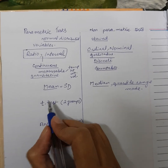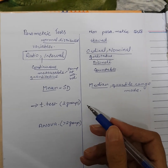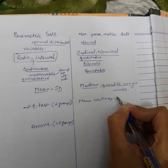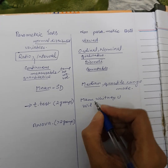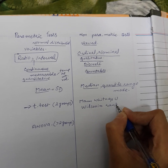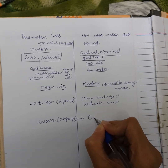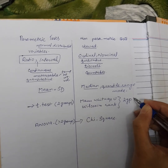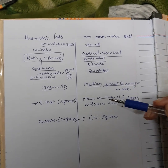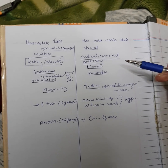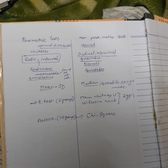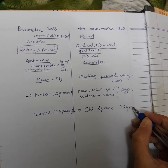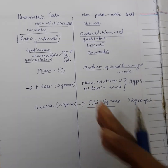In contrast, in non-parametric tests, the equivalent of the T-test is the Mann-Whitney U-test and the Wilcoxon Rank test. The equivalent of ANOVA is the very popular Chi-square test. So for two groups with non-parametric data — skewed data with ordinal and nominal variables, where we have median, quartile range, or mode instead of mean and standard deviation — we use the Mann-Whitney U-test and Wilcoxon Rank test. When we have more than two groups, we use Chi-square.